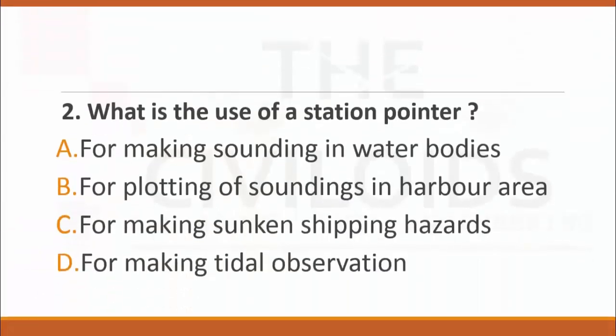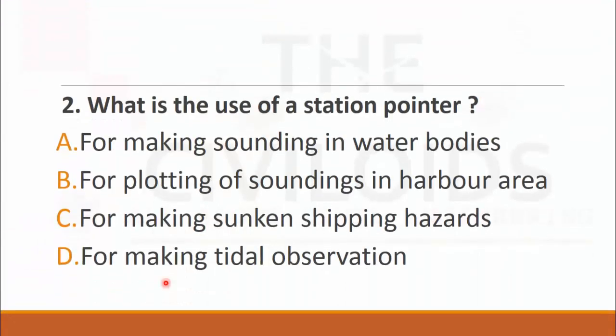MCQ number two: What is the use of station pointer? The choices are: A. for making sounding in water bodies, B. for plotting of sounding in harbor area, C. for making sunken shifting hazards, and D. for making tidal observation. The right choice is B. for plotting of sounding in harbor area.